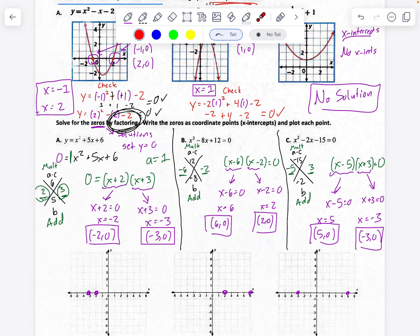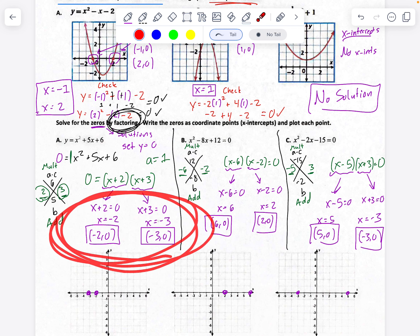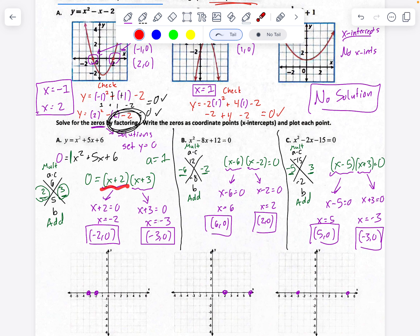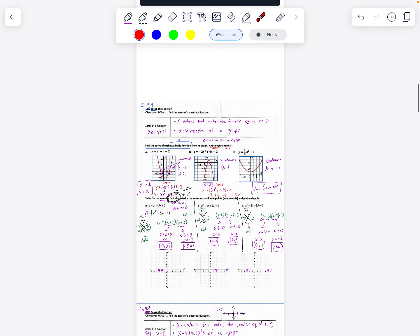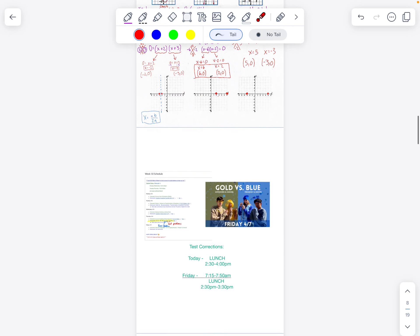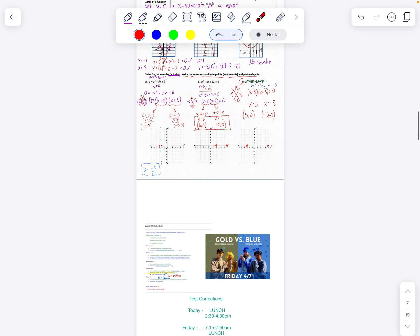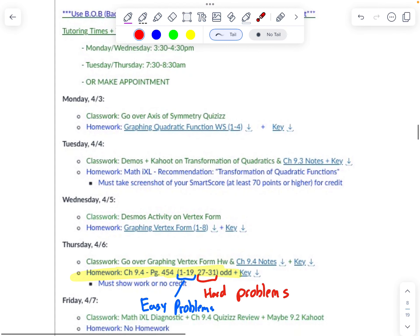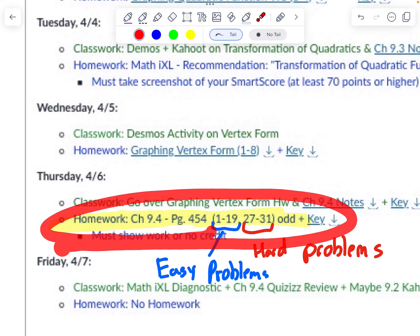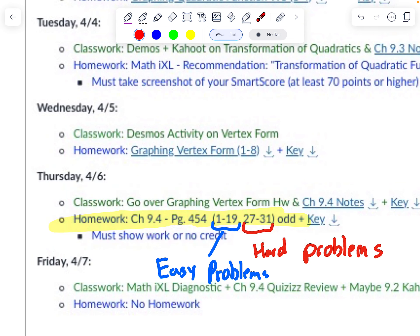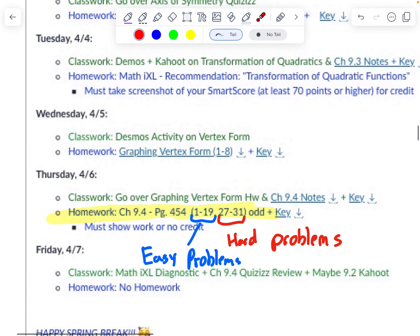So your homework is going to be, you're using the x method again. But then there's an additional step, which is to find your zeros. You find your zeros by setting them each equal to 0. And then you get your x intercept. Good job. Please do your homework. It's going to be in your textbook. Your homework is right here. So page 454, 1 through 19, 27 to 31 odds. All right. Have a good rest of your day.